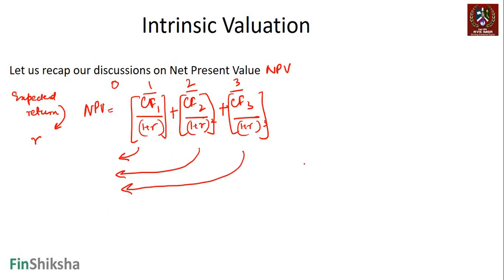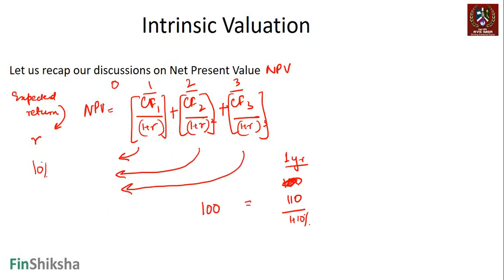If you are going to get 110 rupees from a bank after one year and your expected return is 10%, the price you should be willing to pay for this today is 100 rupees.